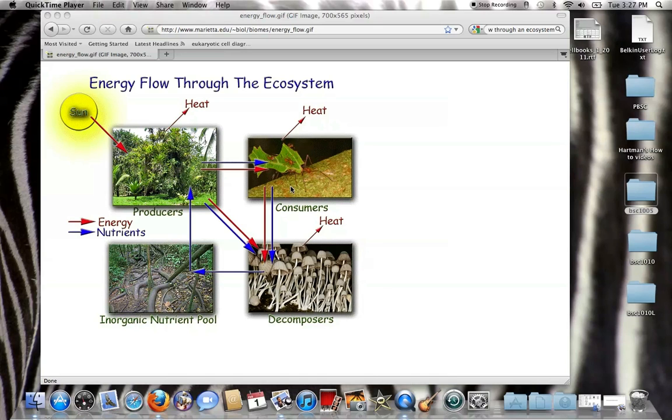So think about these terms, producers and consumers, and think about the organisms that are in these groups. Once again, producers are the plants and other photosynthetic organisms that can make their own food out of the nutrients that are provided either in the soil or in the air, the little particles in the air that rain will collect and drop on these plants.